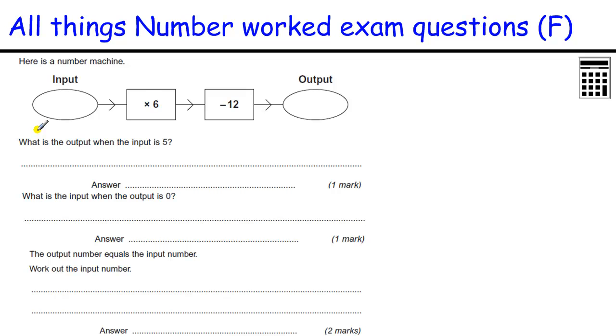Okay, number machine question. What is the output when the input is 5? So we're putting 5 in. 5 times 6 is 30. 30 take away 12 is 18. What is the input when the output is 0? So we're starting with an output of 0. We've got to try and have a guess numbers to figure that out. Or we can do the opposites, the inverses, by adding 12 and then divide by 6, and that will tell us the number is 2. Just check that. 2 times 6 is 12, take away 12 is 0.